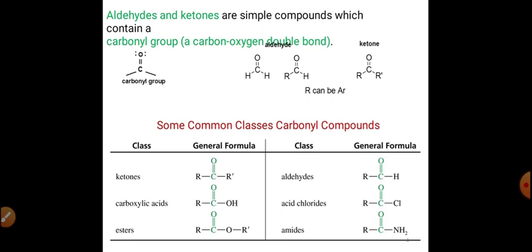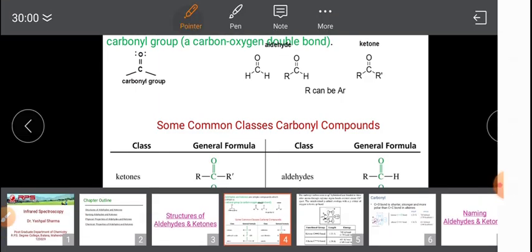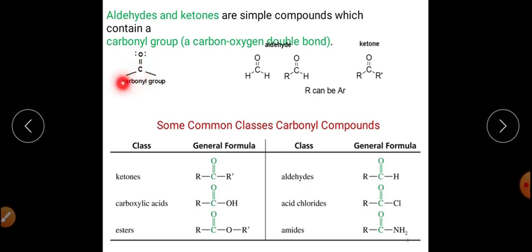The structure of aldehydes and ketones: both contain the carbonyl group, which is C double bond O, and oxygen contains two lone pairs of electrons. In a ketone, two R groups are attached to the carbonyl carbon. If both R groups are present it is a ketone, but if one or both substituents are hydrogen, it is an aldehyde.